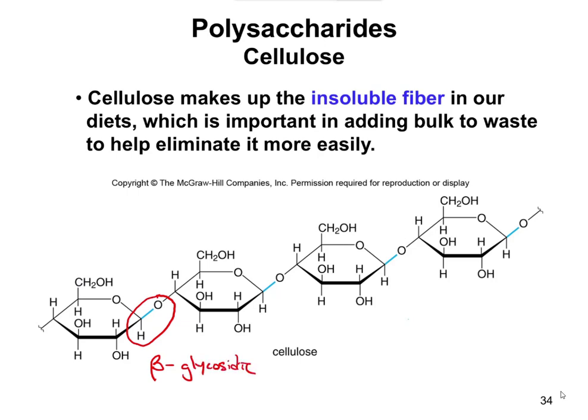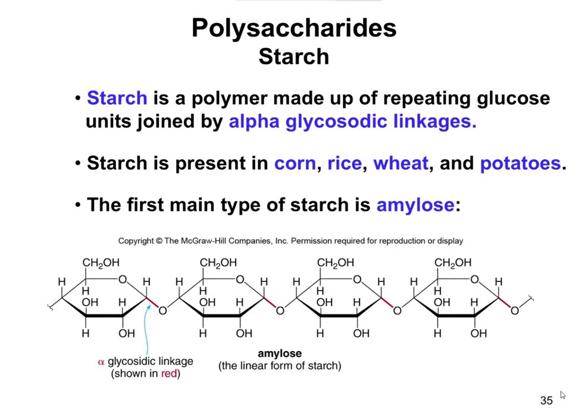Again, cellulose has beta-glycosidic linkages, which humans are not able to break down. Now compare that to starch. Starch is made out of alpha-glycosidic linkages.